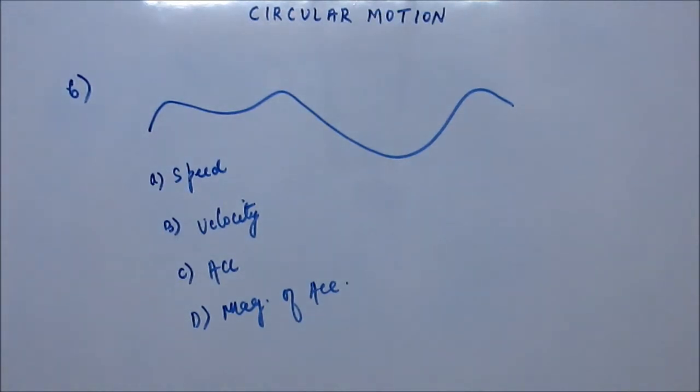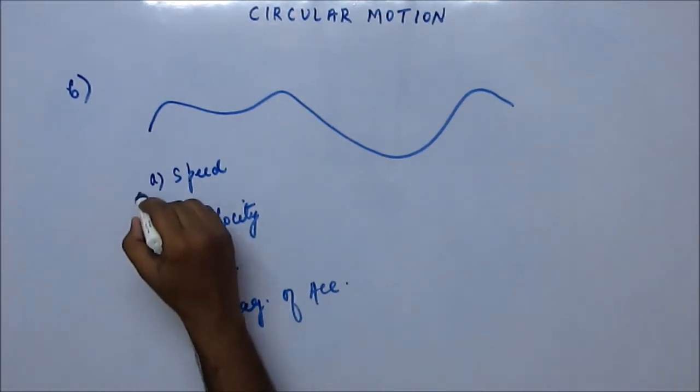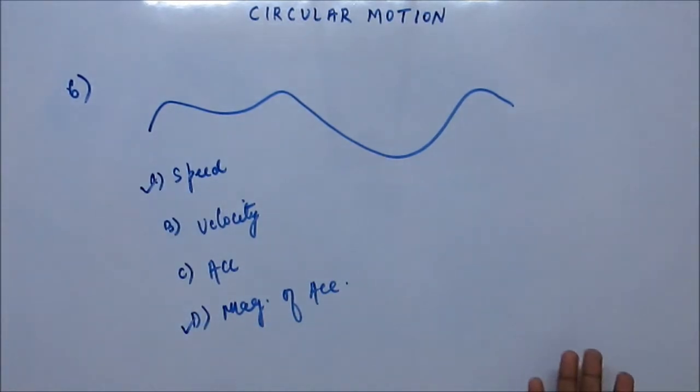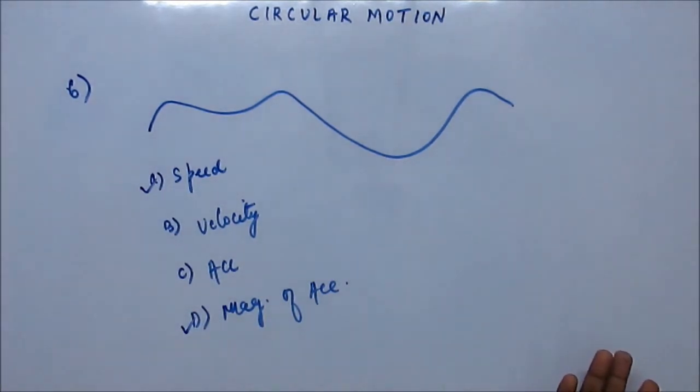The answer would be A and D. Speed can remain constant — speed of course can remain constant.